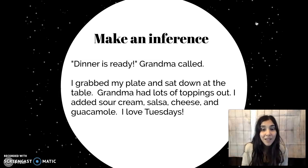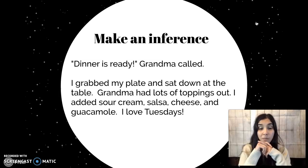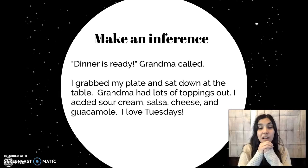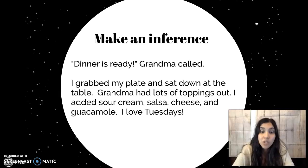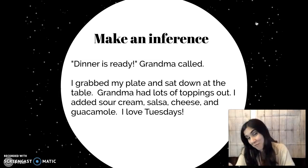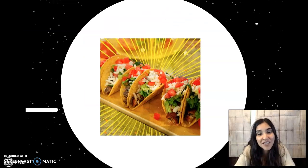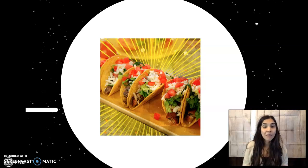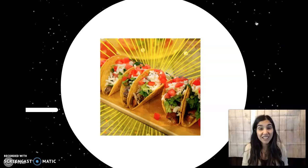I love Tuesdays. Let's try to decide what we think this person is eating. So they're eating dinner — it's not a breakfast food. They have a plate with toppings: sour cream, well you could put sour cream on a lot of stuff, salsa, cheese, and guacamole. And here's a big clue: I love Tuesdays. So what kind of food do some people eat on a Tuesday that you can top with sour cream, salsa, cheese, and guacamole? The correct answer is tacos! These tacos look delicious. Of course, on Tuesdays people often eat tacos. And we probably wouldn't put sour cream and guacamole and cheese on spaghetti, right? Or waffles. So it makes sense that this food is tacos.